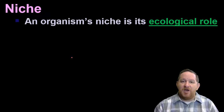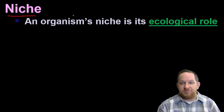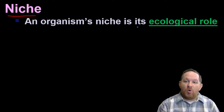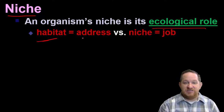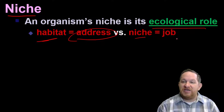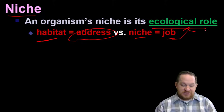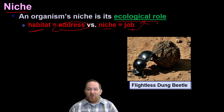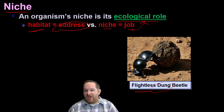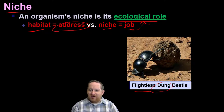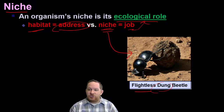We want to start by defining a few terms. A niche — sometimes you might hear it pronounced 'niche' — is really just an organism's role. Don't confuse niche with habitat. The habitat of an organism is its address, where it lives. Its niche is its job or role within that ecosystem. One of the most interesting niches I've ever seen is the flightless dung beetle. As its name suggests, it actually collects and rolls dung, a lot of it from elephants, and uses that for its nutrients — it eats the feces of other animals. That's a very particular niche.